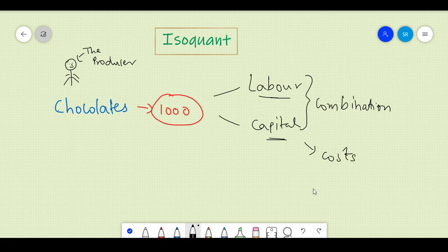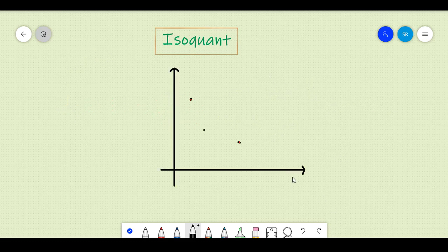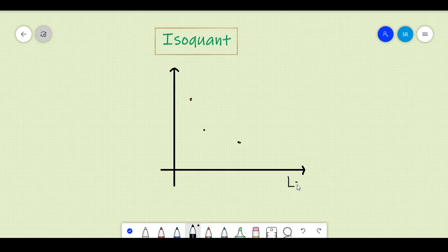Keeping this in mind, let's plot this on a graph. On the x-axis we have laborers and on the y-axis we have capital. Now as we discussed earlier to produce thousand chocolates,